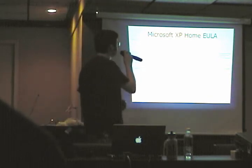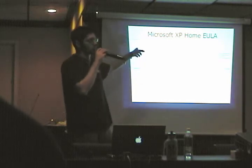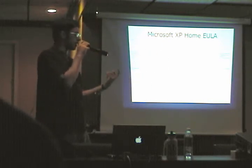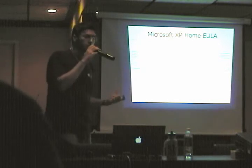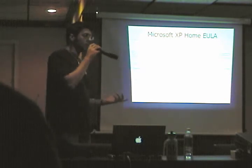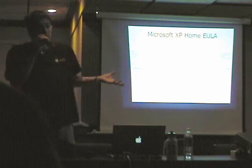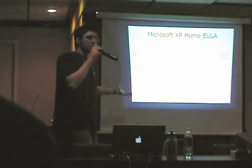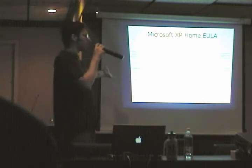Further down: 'This software may not be used by more than one processor at any one time on any single workstation computer.' That's interesting because this is the EULA for Windows XP Home Edition. If you look on the side of the box, it clearly states on the certificate of authenticity that this is for a one-to-two processor computer. Does anyone know of any way to make a multi-threaded operating system force itself to use only one processor in a dual-processor system? You can recognize it and ignore it, but not intentionally limit it. So right off the bat, you have no choice but to violate the EULA if you put this on a dual-processor machine, even though the outside of the box says it supports dual processors.